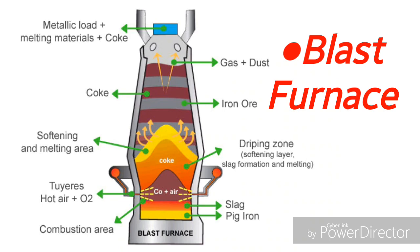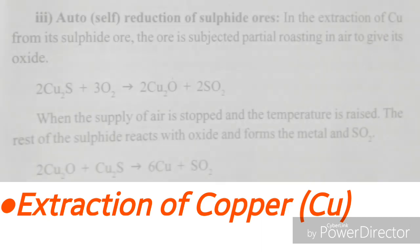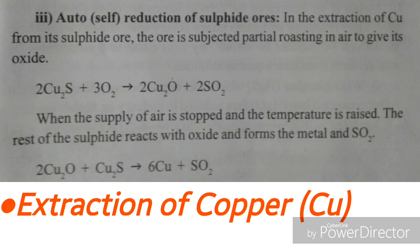The Wysak steel plant has a blast furnace used for the manufacturing of steel. Now let us learn about extraction of copper metal, which is a good conductor of electricity. For the extraction of copper metal, self-reduction of sulfide ores is used.